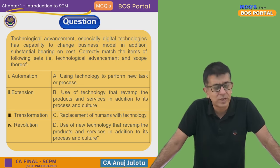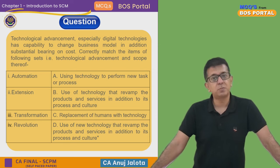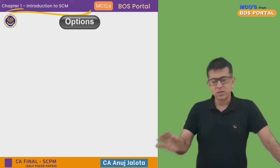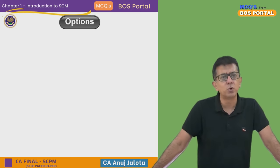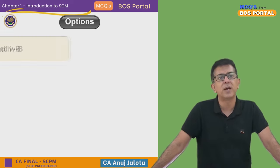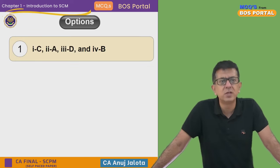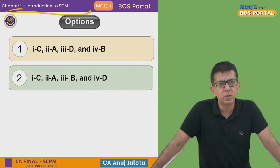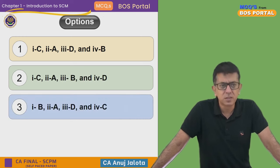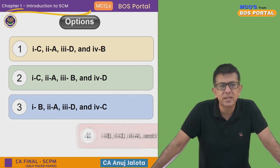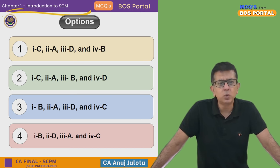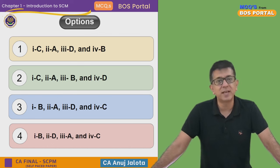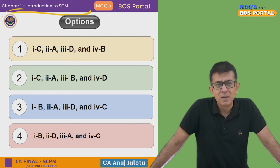Let's bring the four answer options first. For those who want to comment, please do so. The four options for matching are: Option 1 — 1C, 2A, 3D, 4B; Option 2 — 1C, 2A, 3B, 4D; Option 3 — 1B, 2A, 3D, 4C; and Option 4 — 1B, 2D, 3A, 4C. Out of the four, which one is correct? This is the time to comment!